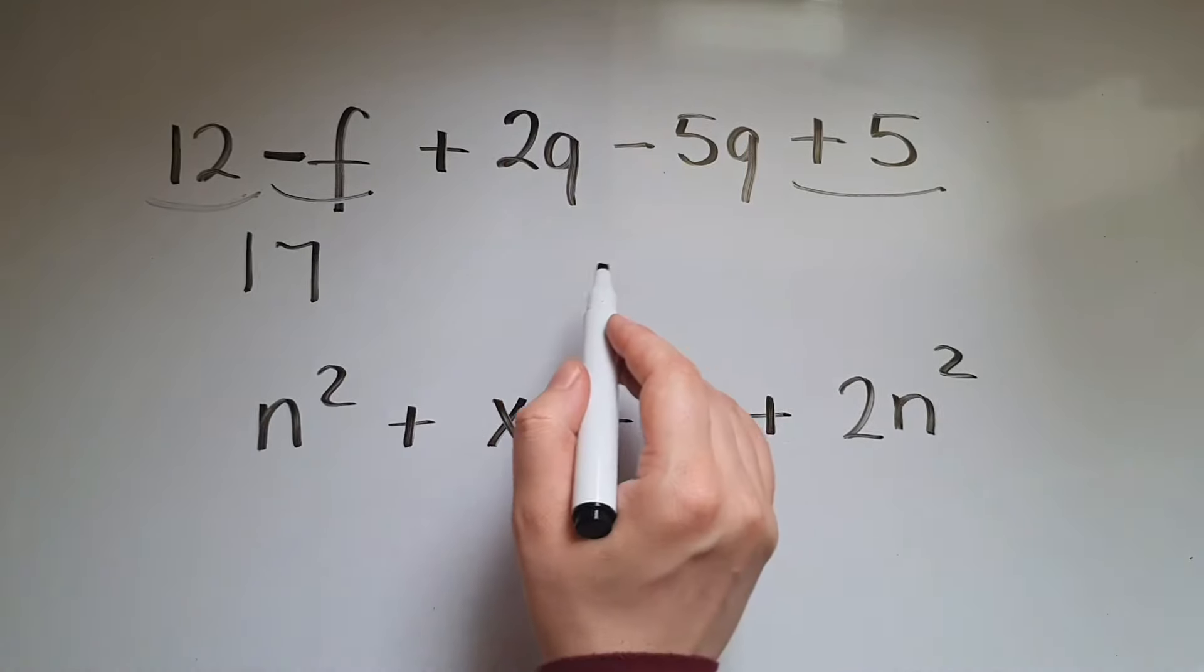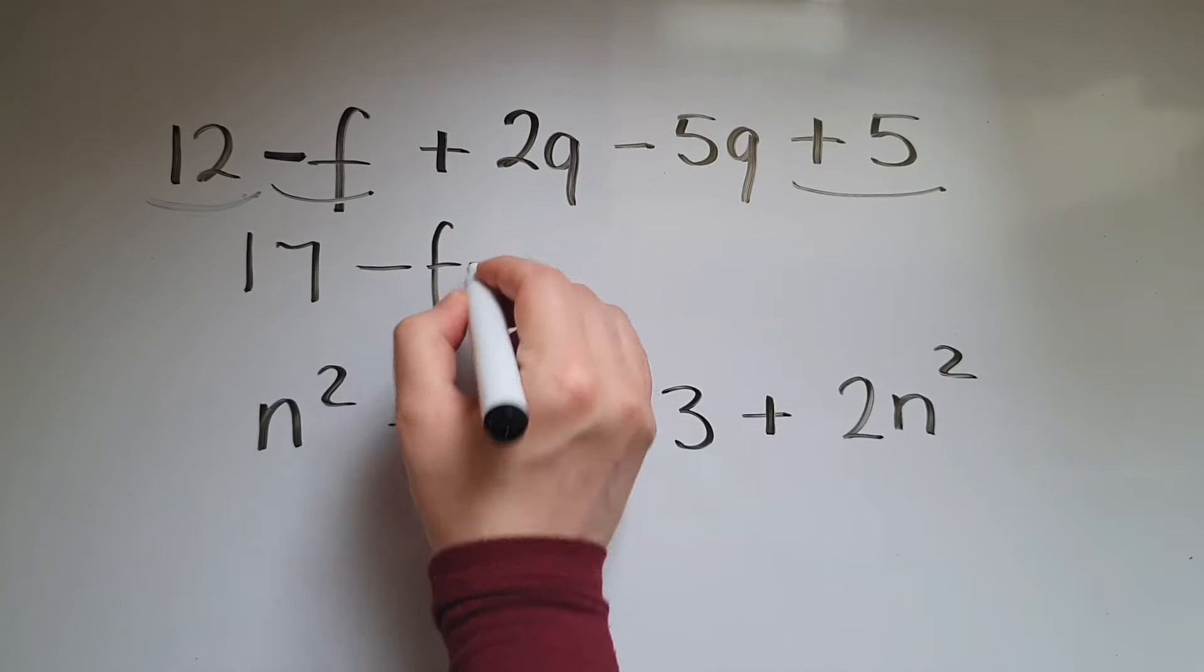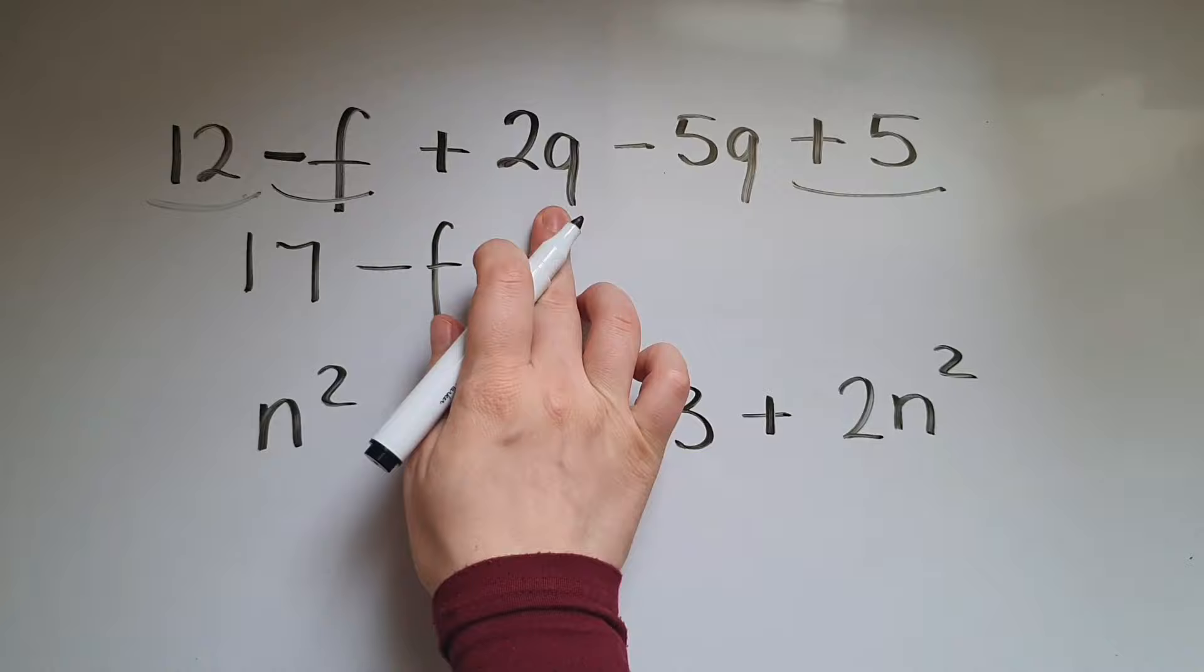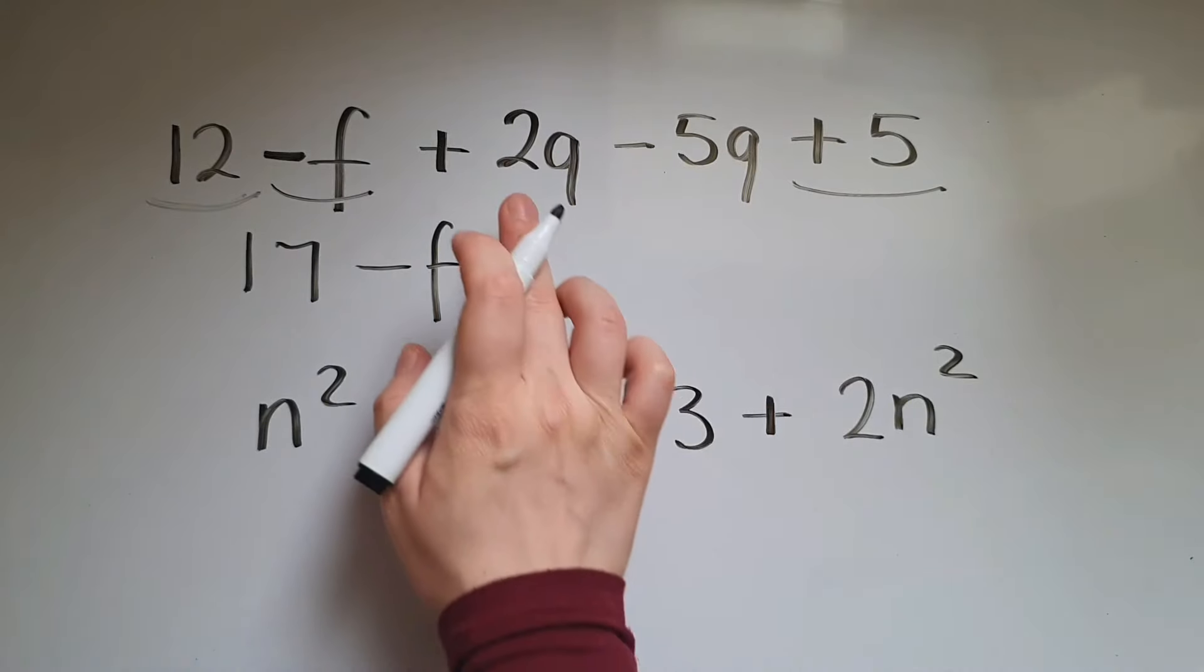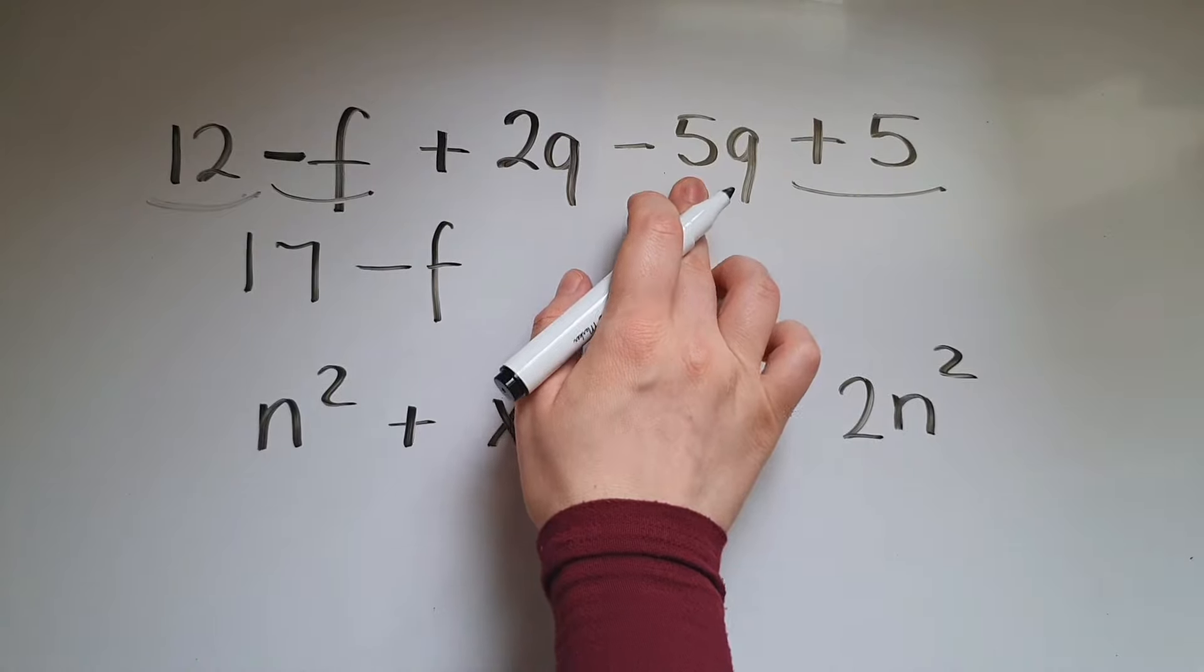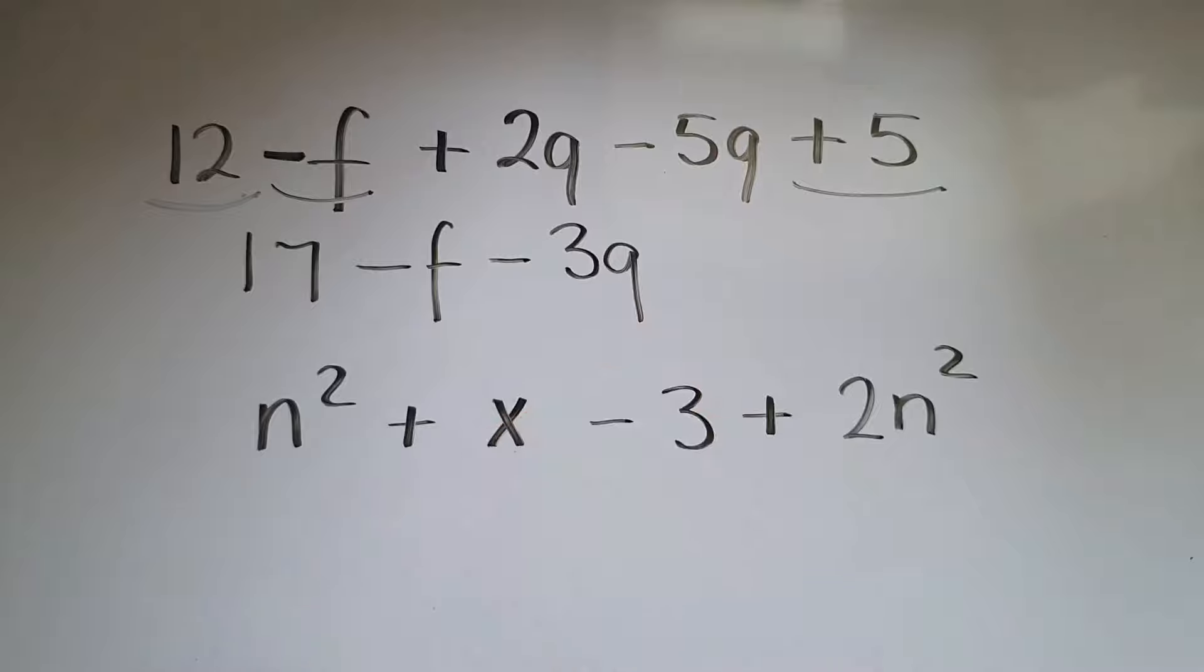Negative f, that's the only one we've got, so we're going to do take away f, plus two q, minus five q. So that is two take away five, that leaves us with negative three, or take away three q in this case.